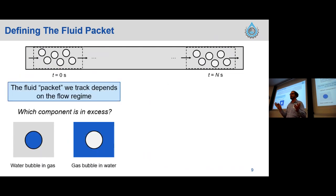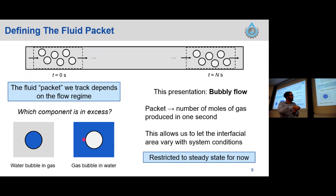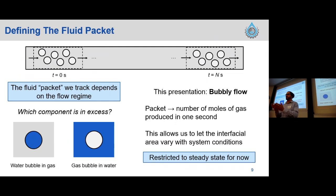In the Lagrangian approach, instead of a control volume fixed in space, we follow a fixed control volume of fluid along our system. What this fluid packet is depends on the flow regime. For now we're restricted to simple examples, but it comes down to thinking about which component is in excess. For example, if we're in a water bubble in gas-dominant flow, we use the water as our fluid packet because water is the limiting phase. Alternatively, in bubbly flow we'd track gas bubbles. We define our fluid packet as the number of moles of gas produced in one second, so we can vary the interfacial area as we go down the system. For now we're restricted to steady state, though that's not a fundamental limitation of the method.